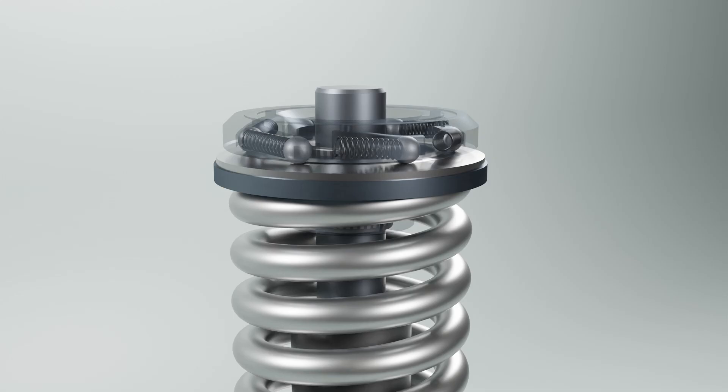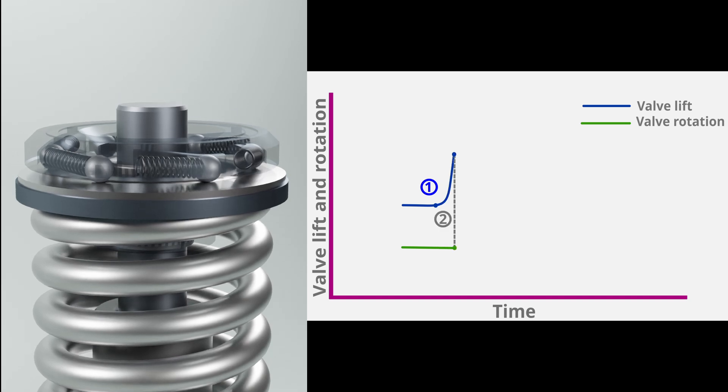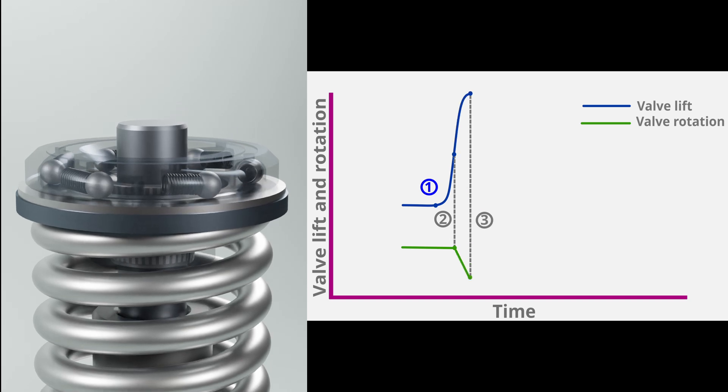Here I have made the rotocap body translucent so that we can see how steel balls and springs move inside the tracks. As we have seen before, now valve is stationary and is at point number 1. From point 1 to point 2, valve is halfway open without rotation. If we break down the moment from point 2 to point 3,